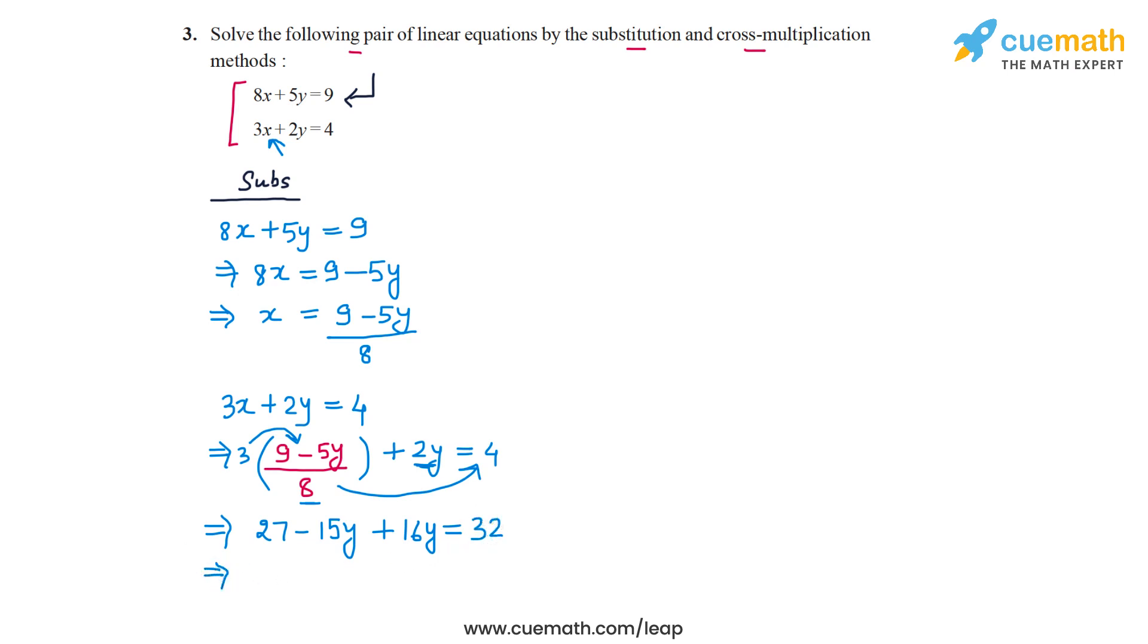So now what will I get? So I have minus 15y plus 16y, so that's y, and this 27 I can take to the right side, subtract it from 32, and that will give me y equal to 5.